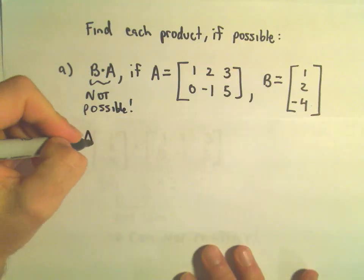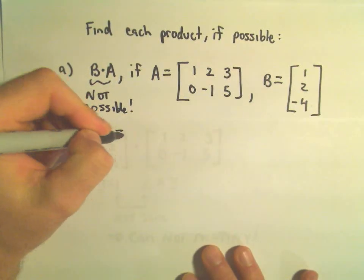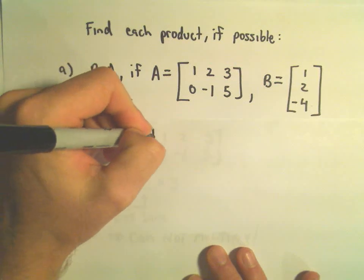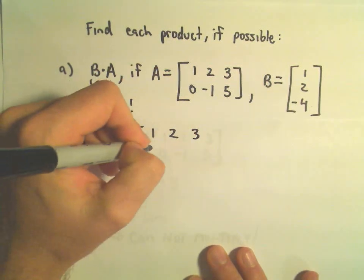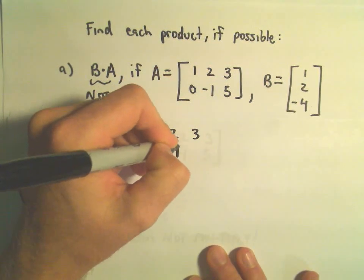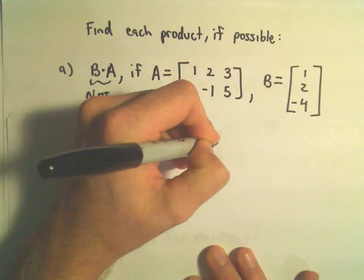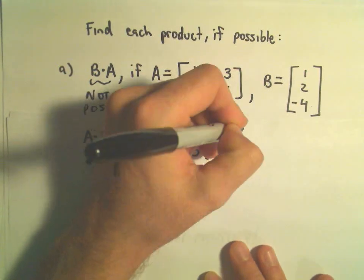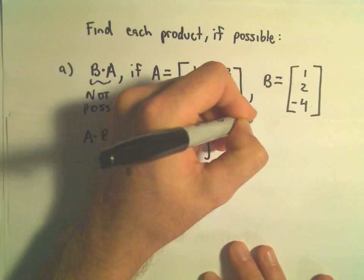Let's try to find A times B. Well, A times B will have 1, 2, 3, 0, negative 1, and 5. And then, matrix B is 1, 2, negative 4.